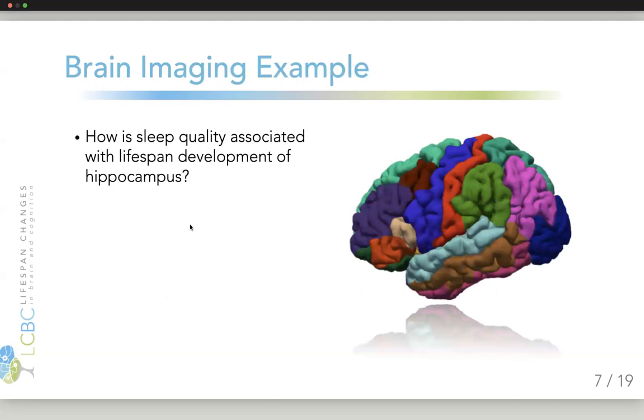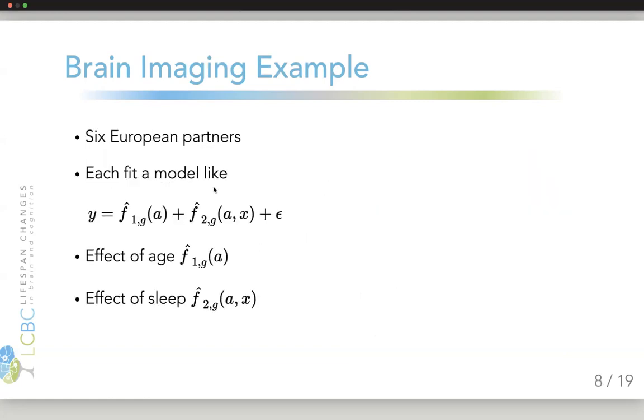One motivating example comes from neuroimaging, where we were studying how sleep quality is associated with the lifespan development of the hippocampus. We had data from six European partners, but we had problems getting permission to share the data so that we can analyze it all in a single place.